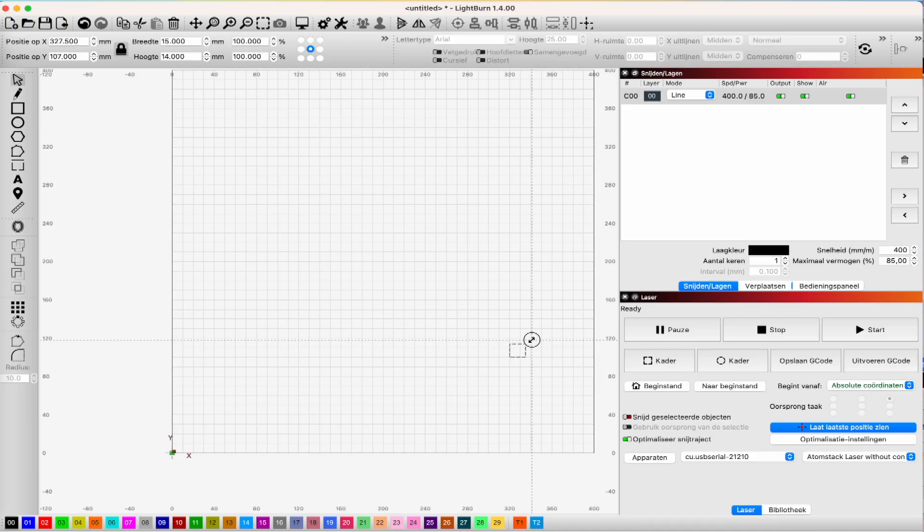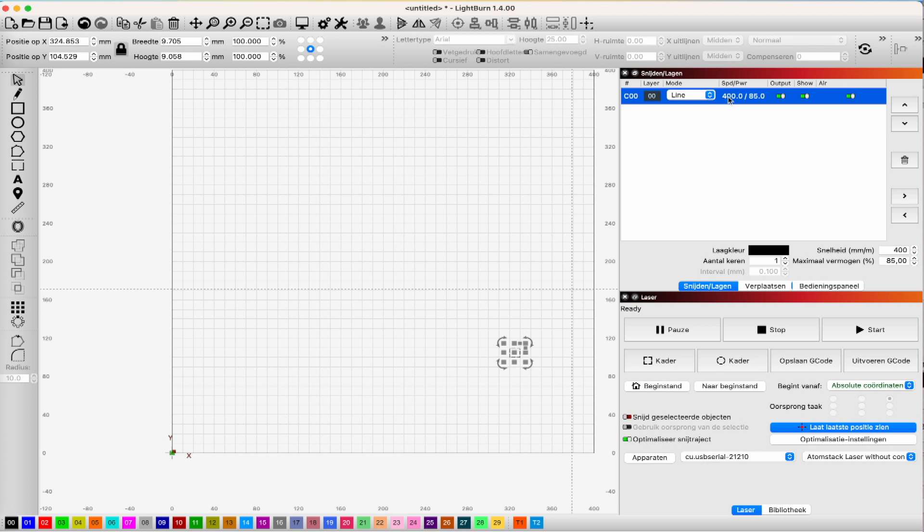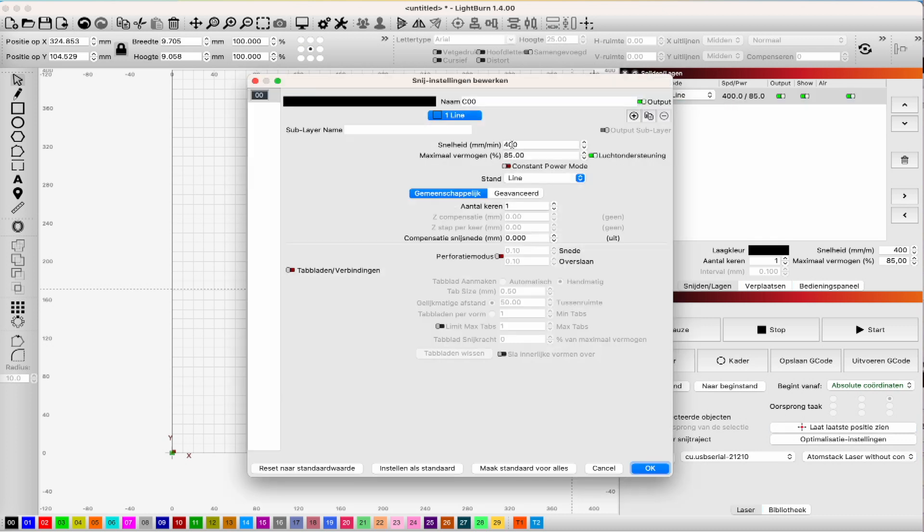Let's just create a very basic shape. And let's just go ahead and turn this up to 95% power, the speed at 100, just to see what this is going to do.